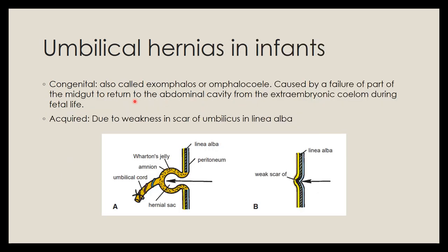Umbilical hernias present differently in infants and adults. In infants, congenital umbilical hernias are caused by failure of the midgut to return to the abdominal cavity from the extra-embryonic coelom during fetal life. If the midgut remains inside the extra-embryonic coelom, this leads to a congenital umbilical hernia also known as exomphalos or omphalocele. Acquired umbilical hernias in infants occur due to weakness in the scar of the umbilicus in the linea alba, after ligation of the umbilical cord.